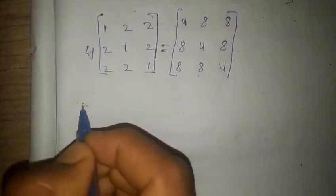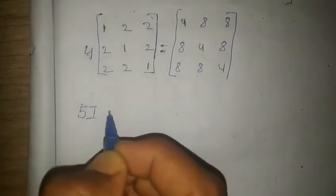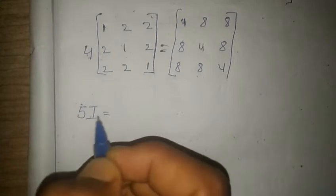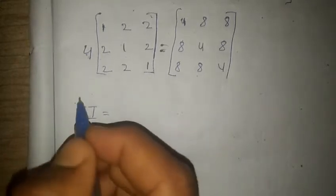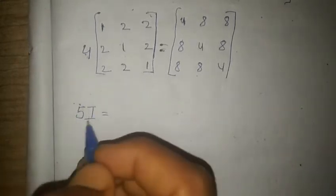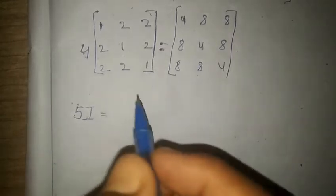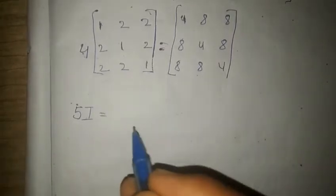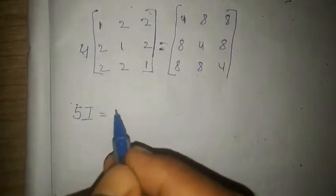Now we have to find 5I. In this problem, the I value (identity matrix) is not given explicitly, but we know that I = [[1,0,0],[0,1,0],[0,0,1]].